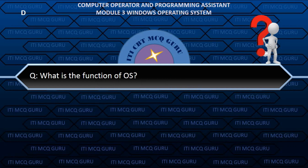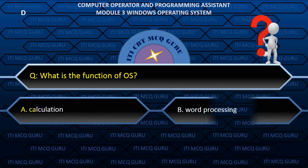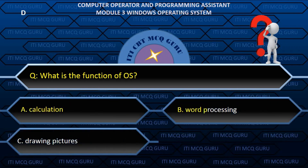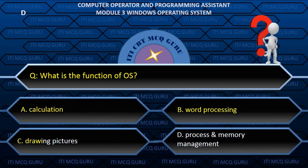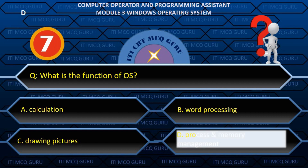What is the function of an OS? D. Process and memory management.